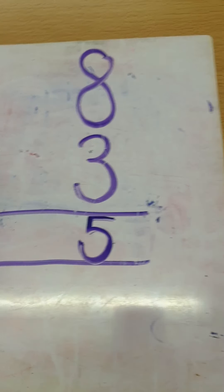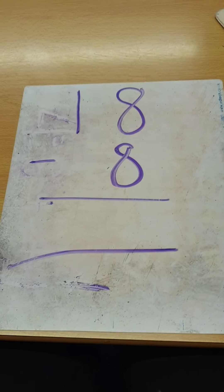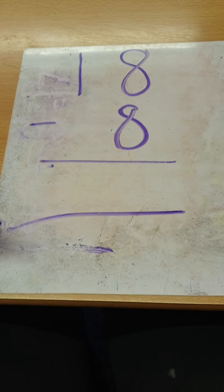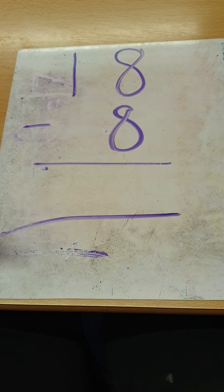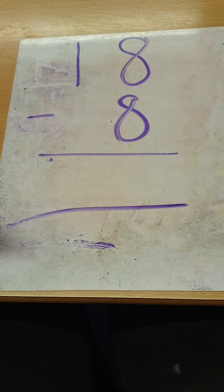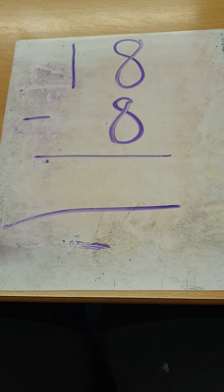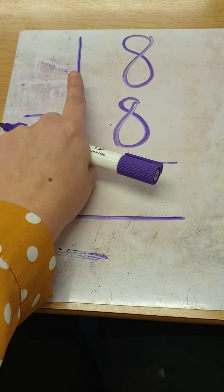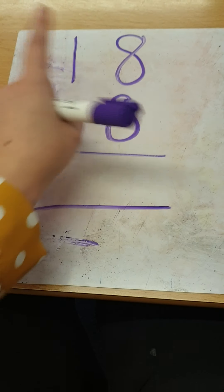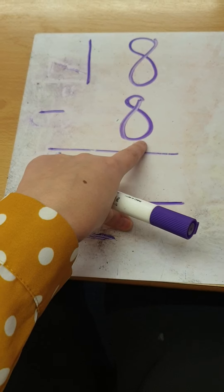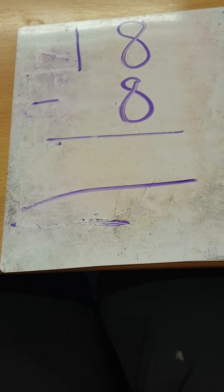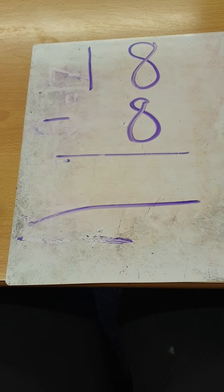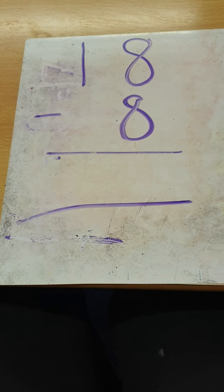Let's have a look at a bit of a trickier one now where we're going to have some tens to look at. I have 18 take away eight. Eighteen is on top because it's the biggest number. If I look at 18 closely, 18 has one ten and eight ones, and eight has zero tens and eight ones. What do we take away first — do we take away the tens or do we take away the ones? We take away the ones first.